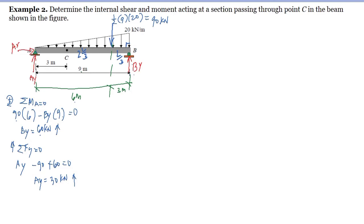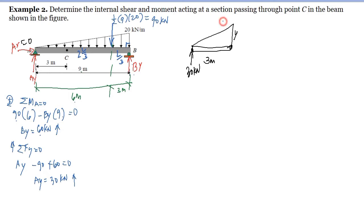We cut at point C to expose the internal loadings. Looking at the left portion of the beam, the height of the load at C is called y, and the distance from A to C is 3 meters as given. The reaction at A is AY equal to 30 kilonewtons upward, and AX equals zero from the horizontal equilibrium. The resultant of the triangular load on the left portion is one-half times base 3 times height y, which gives us 3y over 2.